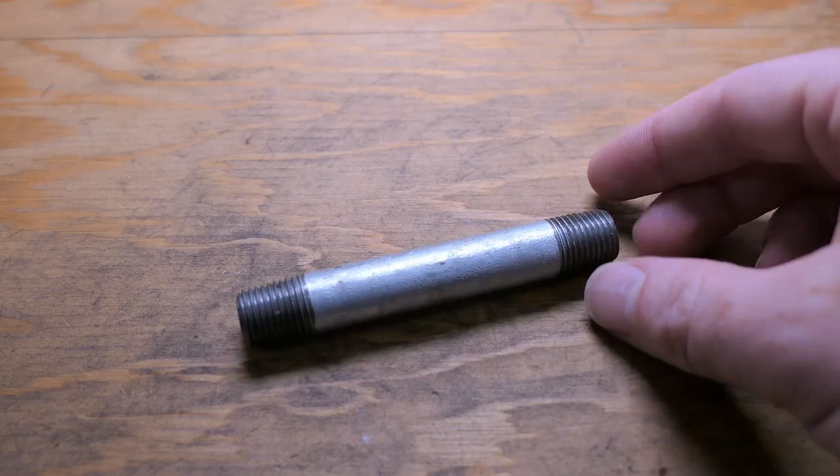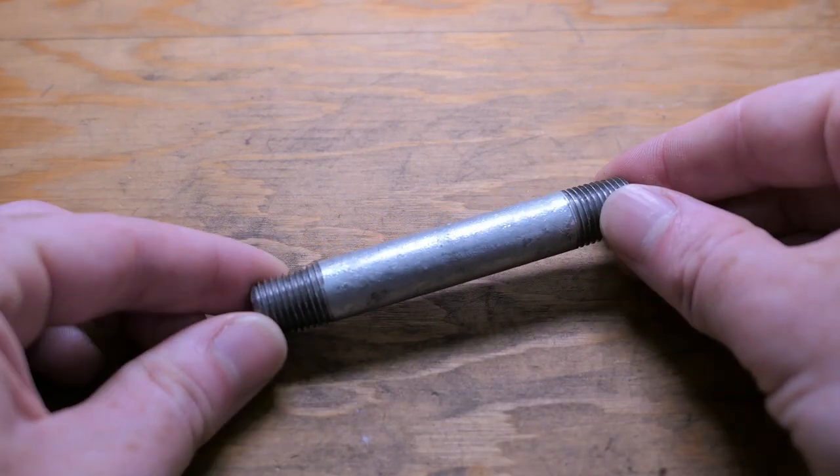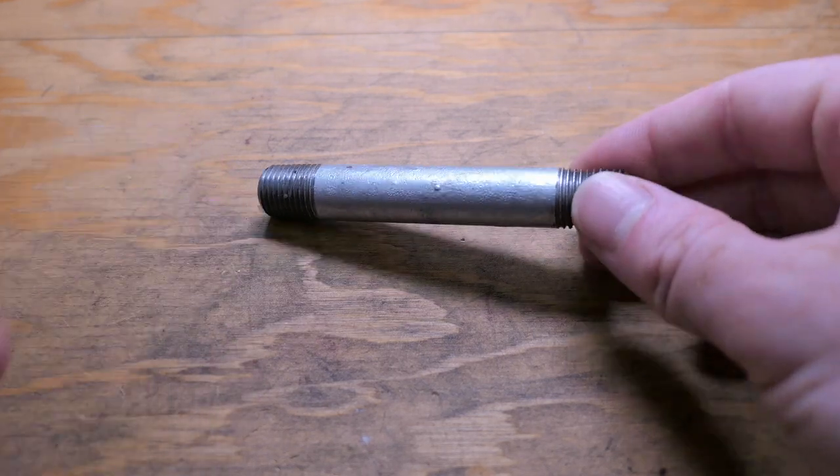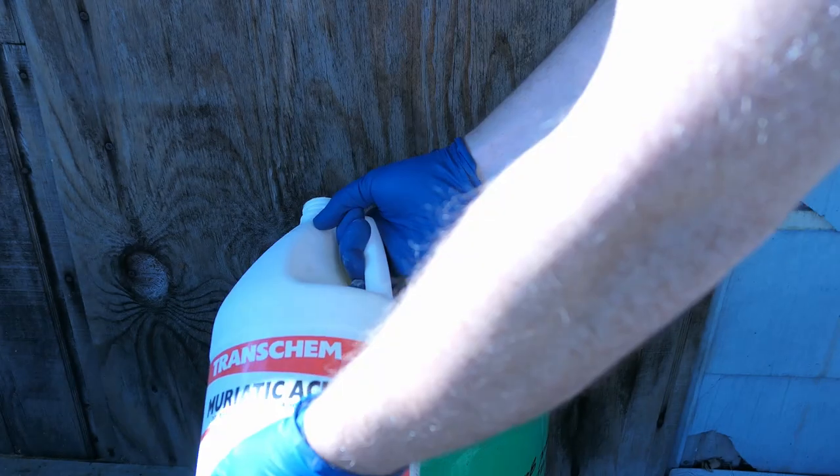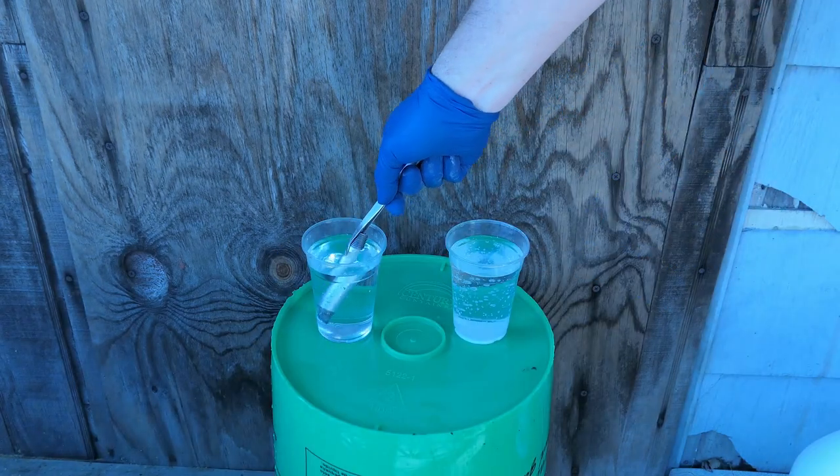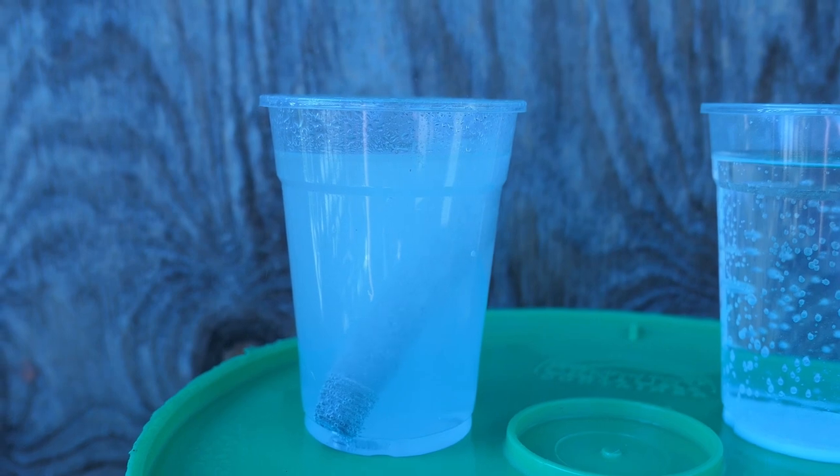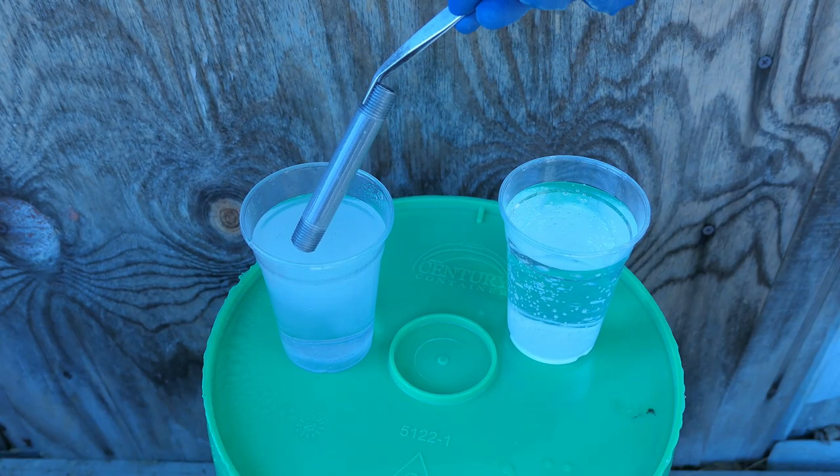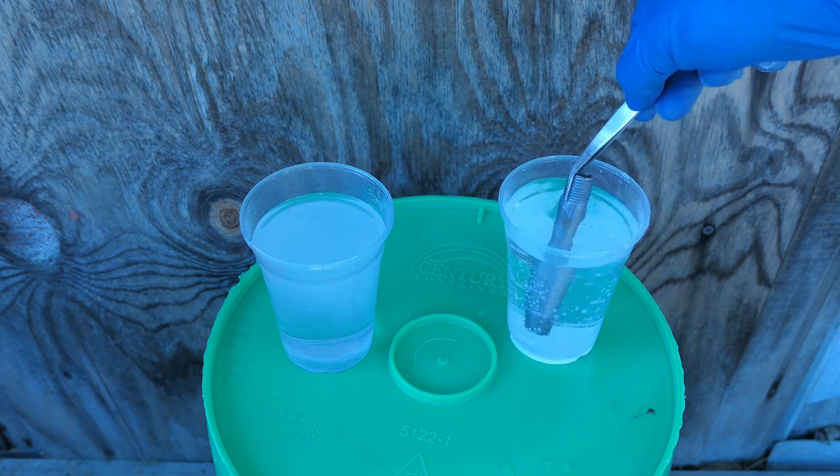So to start things off, I know I'm going to have to weld this pipe later on, and before I do that, I'm going to have to get rid of this galvanized coating. So I'm going to use a small bath of muriatic acid for about 10-15 minutes to dissolve away that zinc coating and get to the bare steel that's good for welding. Then it's placed in a bath of baking soda and distilled water to neutralize the acid left over on the pipe.